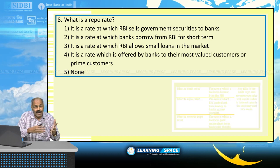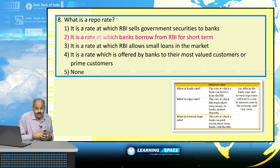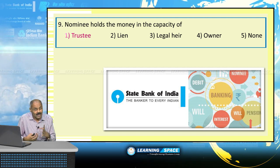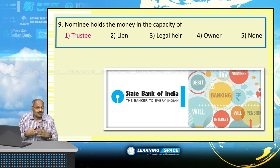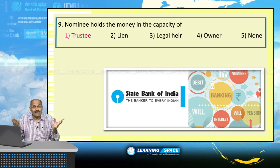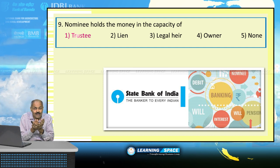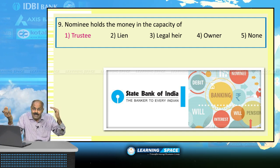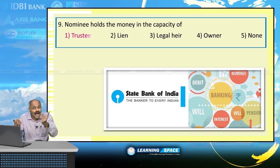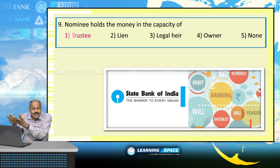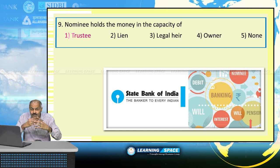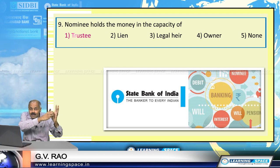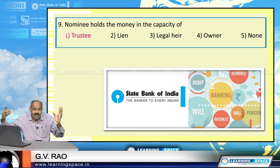Repo rate is the rate at which banks borrow from RBI for short term. Regarding nominees: a nominee holds the money in the capacity of trustee only. If X has an account and Y is the nominee, and X dies, the bank will transfer the amount to Y. Y receives that amount as trustee only — it does not confer the right on Y to utilize that amount, as it legally belongs to the legal heir.